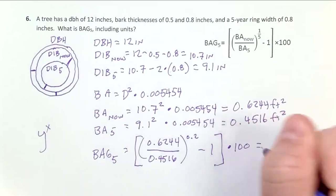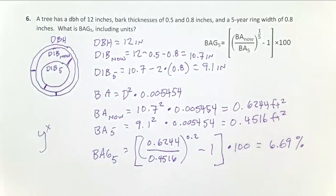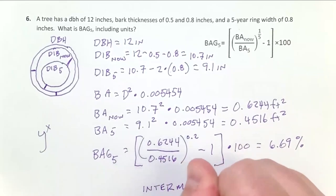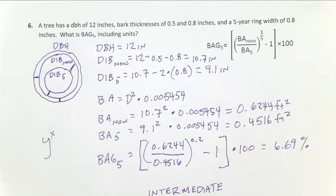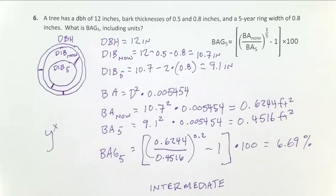In this case, all that adds up to 6.69 in our units. Remember, this is like a compound interest rate percent. How do we interpret this? That's kind of an intermediate rate—not super high, not super low. You may not need to cut immediately, but may be thinking about cutting in the near future. That's the solution to a basal area growth rate problem.